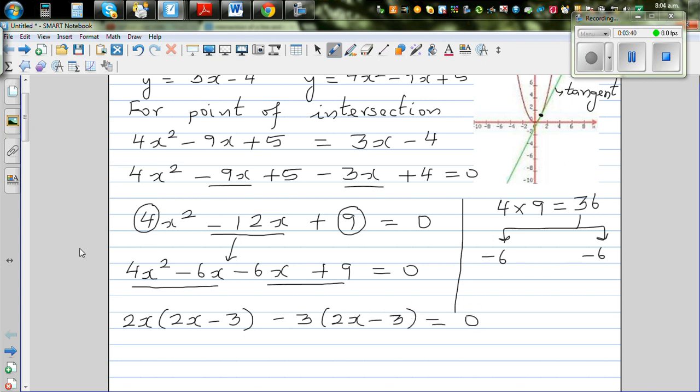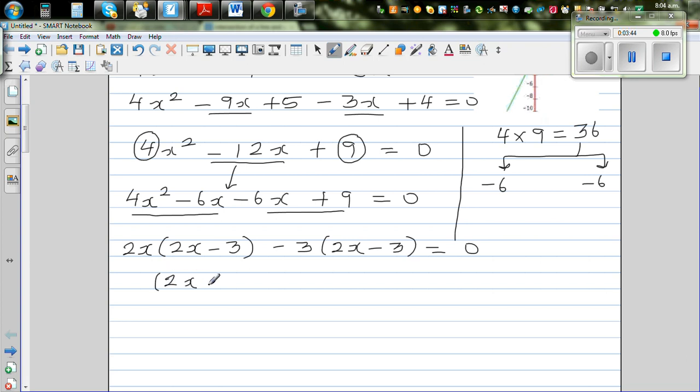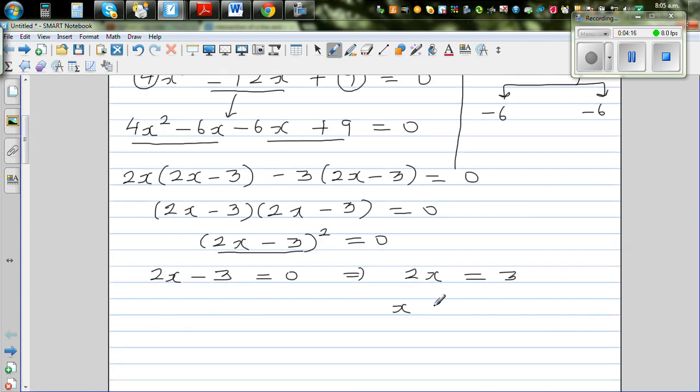I'll also show you how you can do the same thing on a graphic calculator. This is nothing but 2x minus 3 times 2x minus 3 equals 0. This means you can say 2x minus 3 squared equals 0. This means, logically, this has to be 0, because 0 squared can only give you 0. So 2x minus 3 should be 0, which implies 2x has to be 3, because 3 minus 3 gives you 0. So x is 3 over 2, which is 1.5. You can get only one solution here. Though it's a quadratic equation, you've got only one solution.